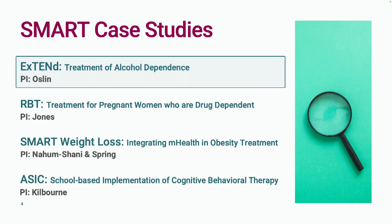The first SMART we're going to talk about is called EXTEND. I should add that only one of these is in education — we're not worried about that. Our goal is to give you a broad spectrum of SMARTs, and they happen to come from a wide range of disciplines. The first two are in substance use, the third is in weight loss, and the fourth is in education.